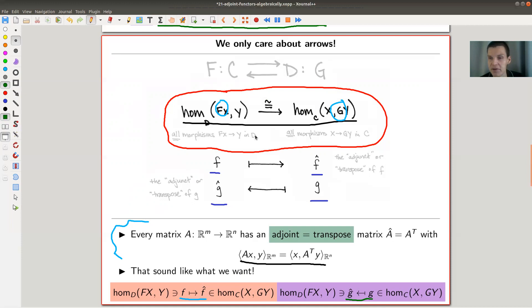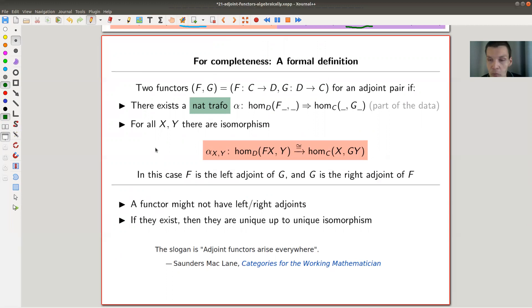It really makes this definition fly. And here's an abstract form of definition. Two functors, F and G. So F goes from C to D, and G goes from D to C. They form an adjoint pair. Well, there's some left right nonsense involved. So F is the left adjoint, and G is the right adjoint in this picture.